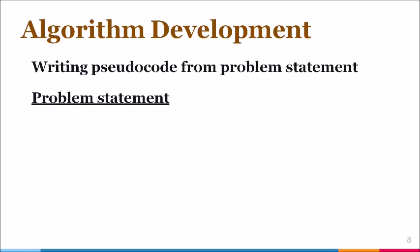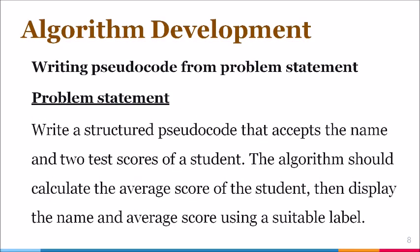Let's look at what is required to write a pseudocode from a problem statement using sequential construct. First, the problem statement. This problem asks that we write a structured pseudocode that accepts the name and two test scores of a student. The algorithm should calculate the average score of the student then display the name and average score using a suitable label.